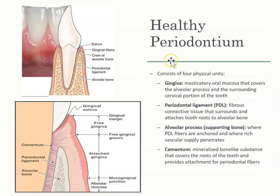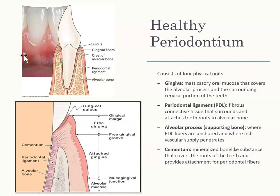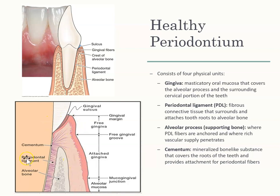When looking at a healthy mouth, we see stippling, nice tight gums, and a coral pink color. The gingiva has many different components. It has the sulcus — the area where you probe. It has the free gingiva, which is free from the tooth and not stuck on. And it has the attached gingiva, which is fully attached to the tooth.